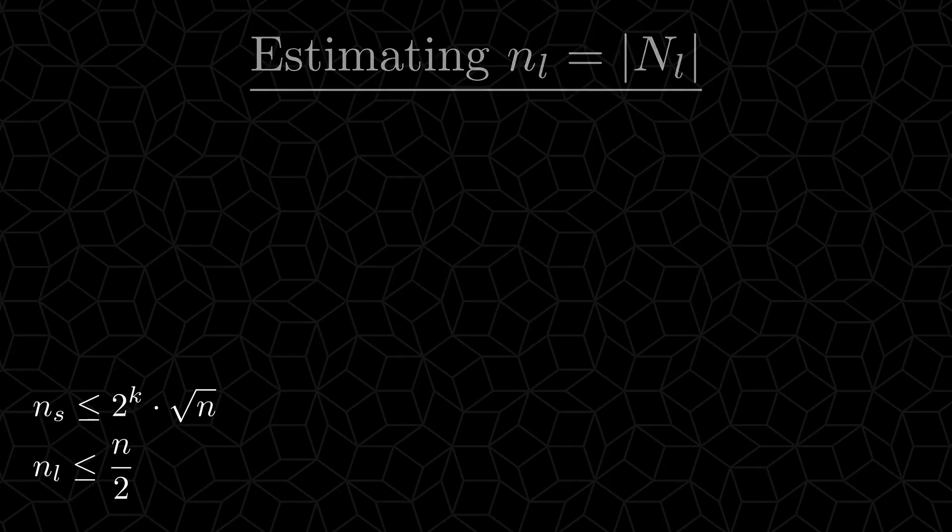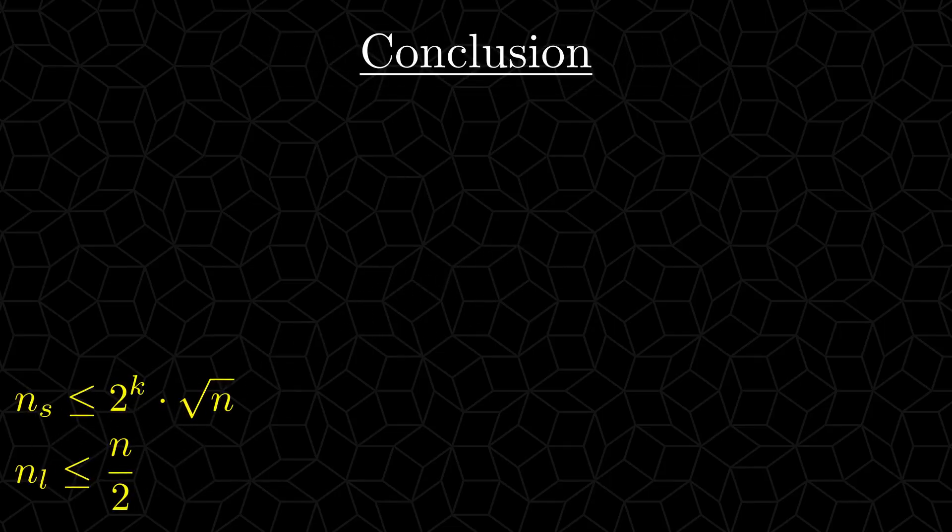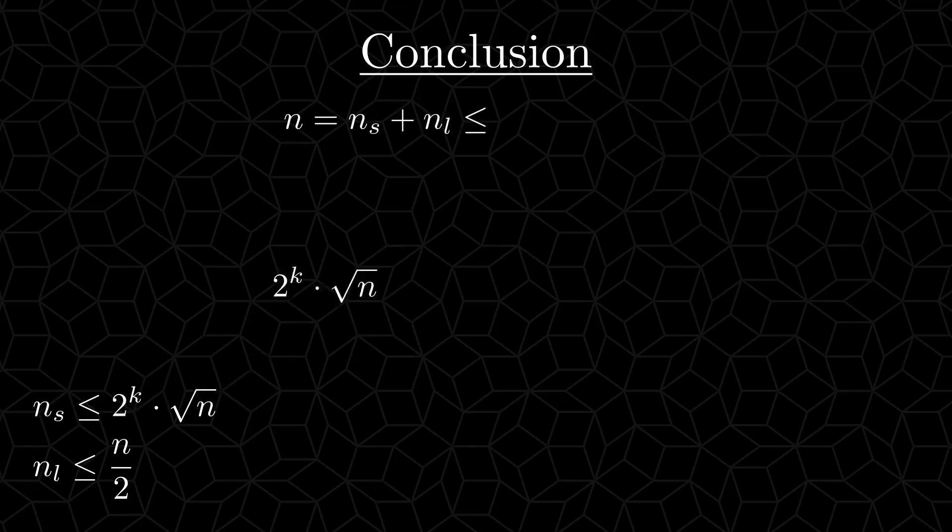And now we are ready to arrive at the conclusion. Using our estimates, N is less than or equal to 2 to the power of k times the square root of N plus N divided by 2. Now this is supposed to hold for every single N. So in particular, it should hold when N is equal to 2 to the power of 2k plus 4. Let's insert that into our estimate.